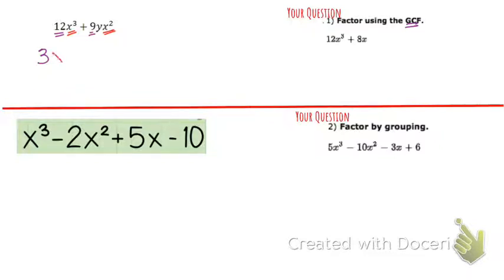So I can pull out x squared from both of those. And then y's, this one has a y, but the other one doesn't. So I can't factor, they don't have a y in common. They have to be common factors of both.